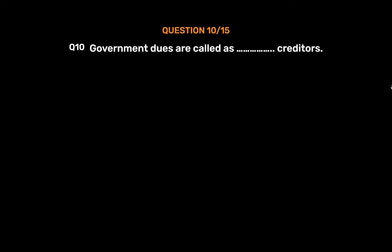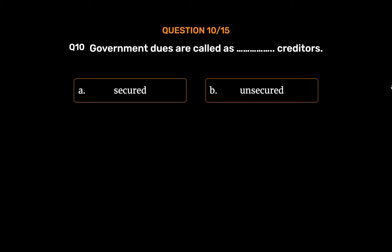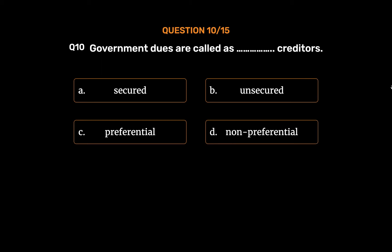Question number 10. Government dues are called as which type of Creditors? Option A: Secured. Option B: Unsecured. Option C: Preferential. Option D: Non-preferential. The correct answer is Option C — Preferential.